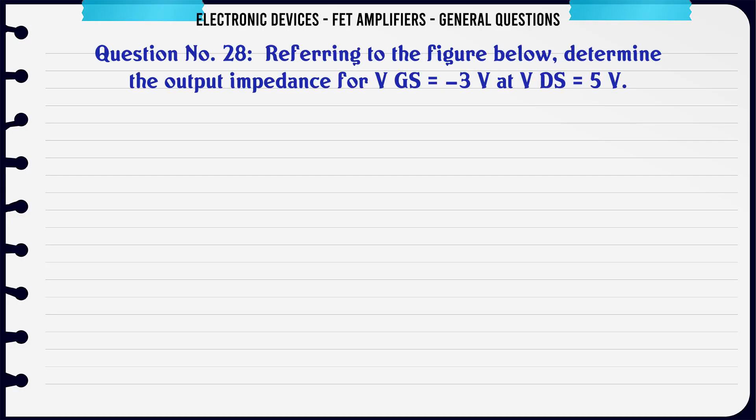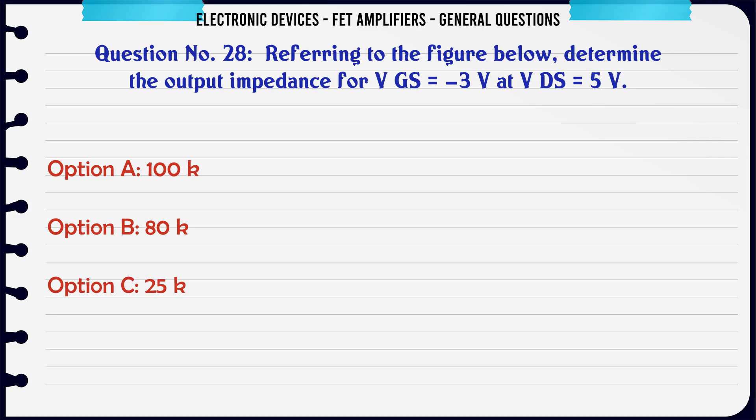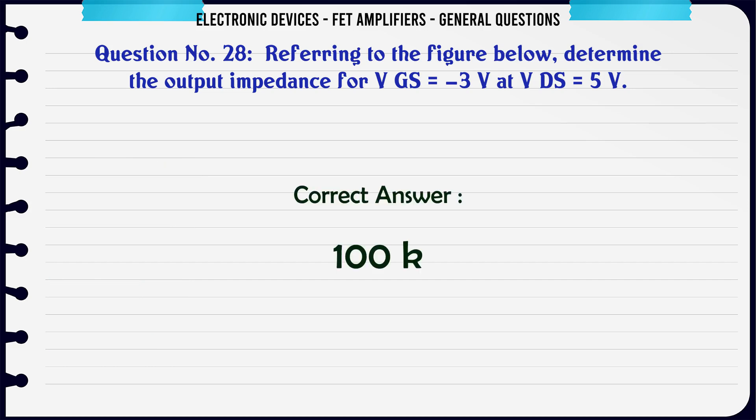Referring to the figure below, determine the output impedance for VGS = 3V at VDS = 5V. A. 100KΩ. B. 80KΩ. C. 25KΩ. D. 5KΩ. The correct answer is 100KΩ.